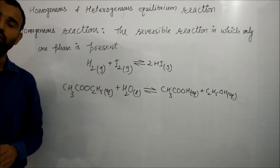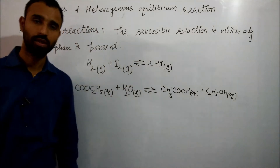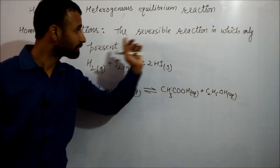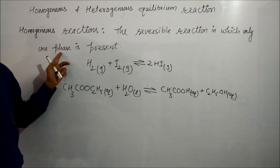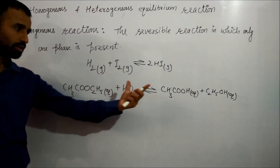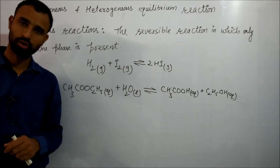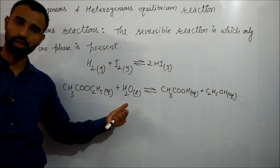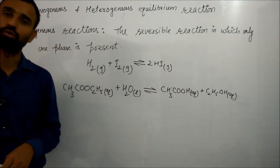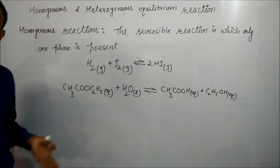Ethyl acetate is again an example of homogeneous equilibrium because all are soluble in water. To summarize: homogeneous means only one phase is present. Remember, it is phase, not state. Phase means a uniform mixture — different liquids that when mixed together in water form a homogeneous mixture, which is why it is called a homogeneous reaction.